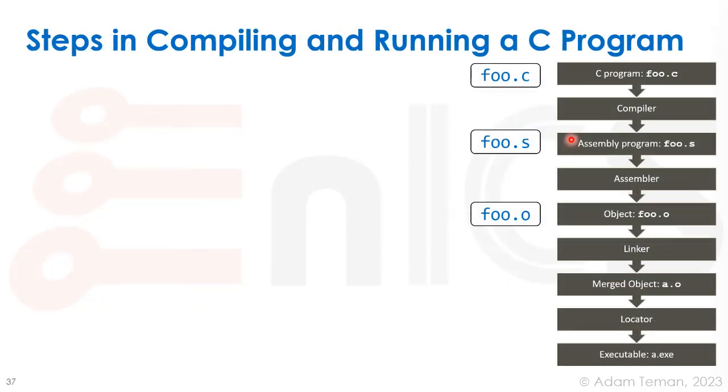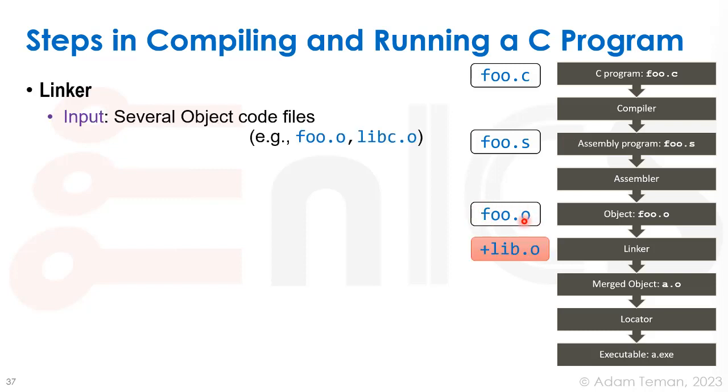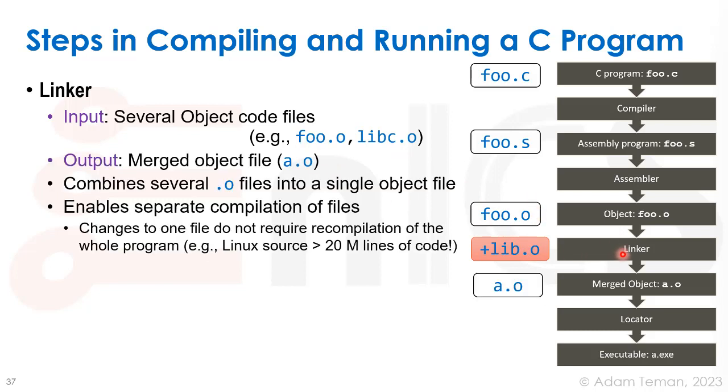After we have our foo.o object file, we're going to link it. We have other files—maybe we compiled several files separately or want to use pre-compiled libraries like printf. We take as input several object files (like foo and lib files), stick them into a linker, which merges them into one object file. This a.o file combines all the machine code from foo.o, lib.o, and other files.